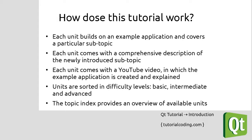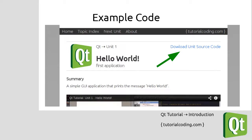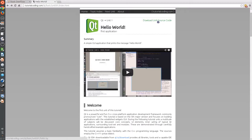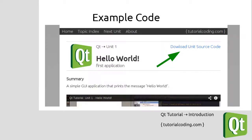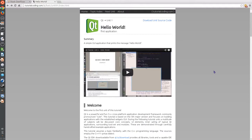The units are sorted into three basic levels: the basic level, the intermediate level, and the advanced level. The tutorial also comes with a topic index that provides a good overview of the units. The source code can be downloaded at the top of each unit — there is a link to download the unit source. It is usually a Qt Creator project, so you can easily open it with Qt Creator and just execute it.